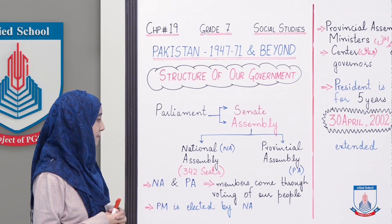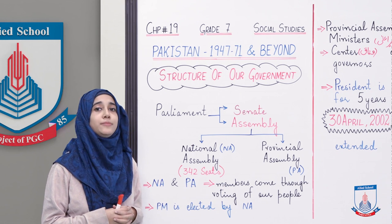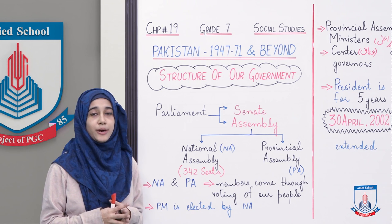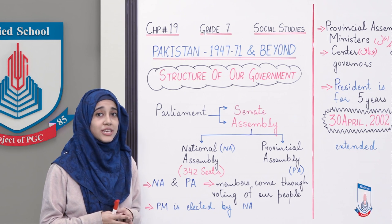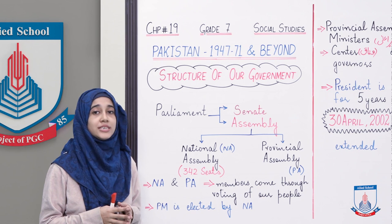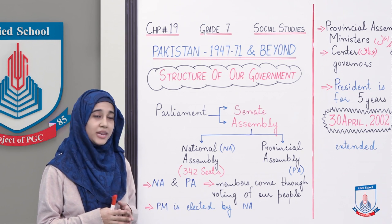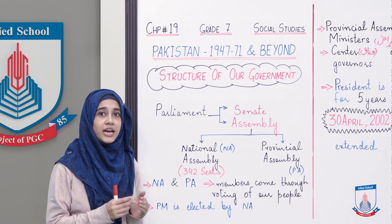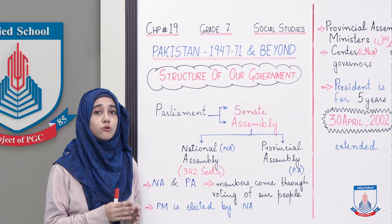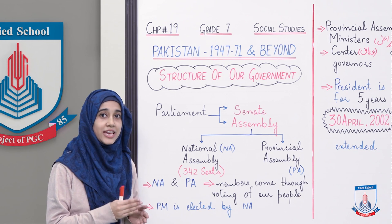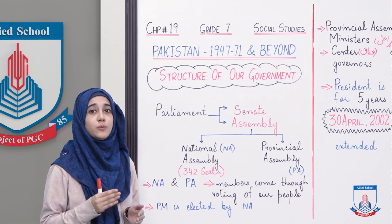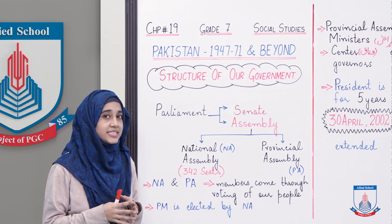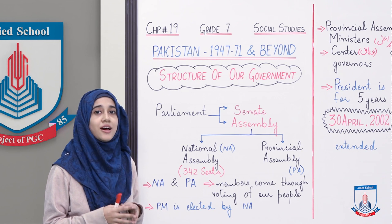Prime minister is elected by national assembly. Hamara jo prime minister hai, woh elect karta hai hamari national assembly. Ab agar kisi ne humara prime minister, wazir-e-azam banna hai, toh uske liye zaroori hai ke uske paas national assembly mein seats zyada hon. National assembly ki total 342 seats hoti hain. Toh usko chahiye ke uske paas 342 ke half se, yaani ke 170 ya phir 170 se zyada seats hon. Agar uski jamaat ke paas 170 ya 170 se zyada seats nahi hongi, toh phir woh humara prime minister nahi ban sakta.